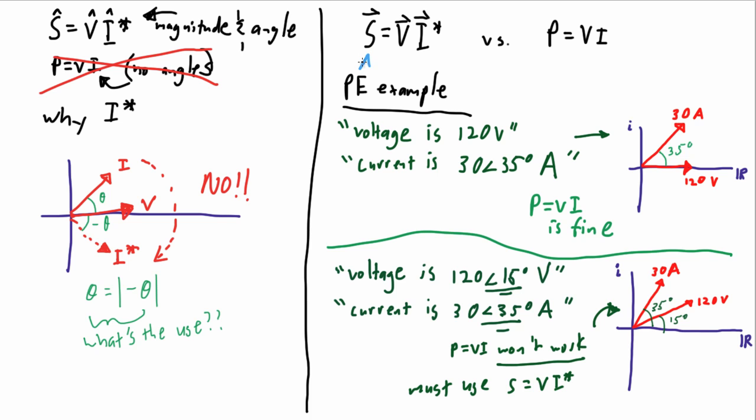The S equals VI* conjugate formula begins in absolute scenarios. So, we know the conjugate, graphically speaking, really means to pivot around the absolute x axis.